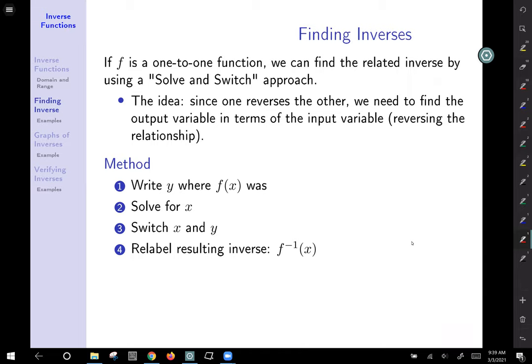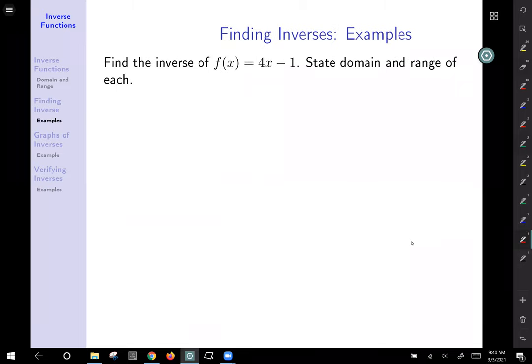So let's take a look at two examples of how to do this. Okay, so let's grab a pen, and we've got f of x equals 4x minus 1. So y is equal to 4x minus 1. I need both x and y, so I'll replace the output f of x with y, because they mean the same thing.